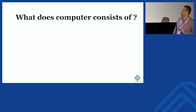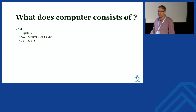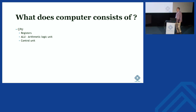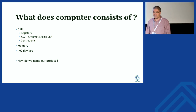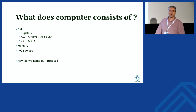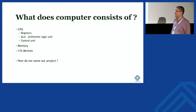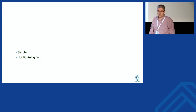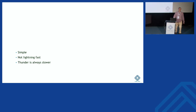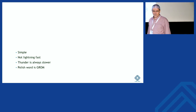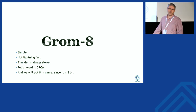Let's get started with our project. What does a computer consist of? We have a CPU with registers, an arithmetic logic unit, and a control unit. We also have memory and IO devices. Now, the important thing: how do we name our project? I was thinking it must be simple. This won't be lightning fast, so it's more like thunder. The Polish word for thunder is Grom. This will be an 8-bit CPU, so we'll call it Grom 8.